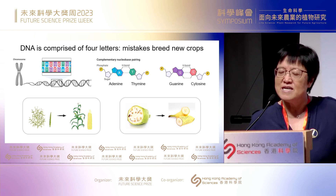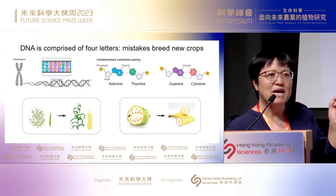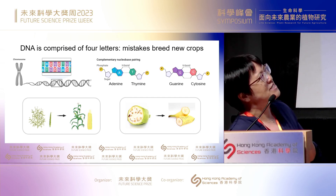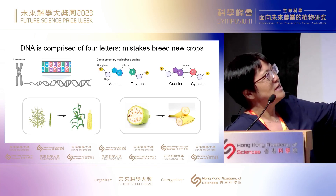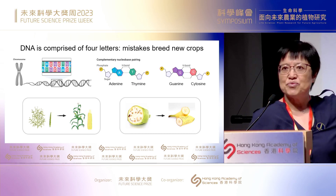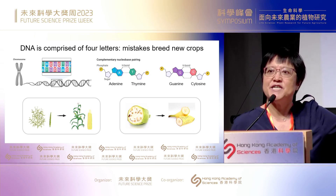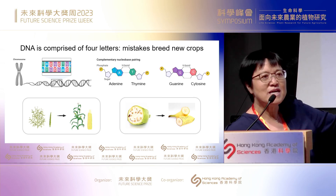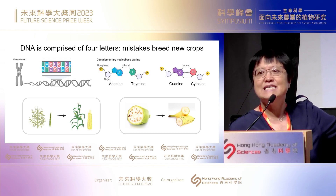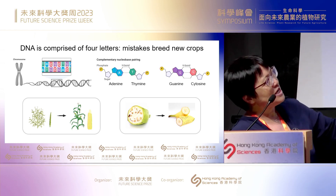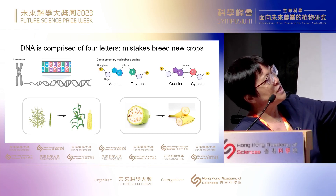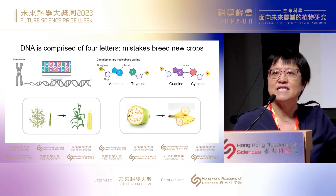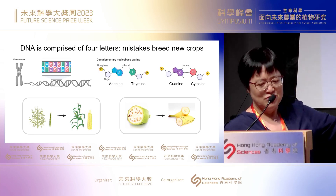DNA sequence changes are sometimes required or designed in many applications. For example, in crop breeding, breeders rely on genetic changes that accumulate over years to breed or create a new desired variety. Here you can see the modern varieties of corn and banana look vastly different from their ancestral forms.